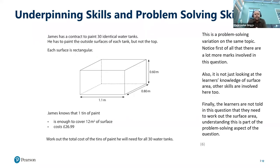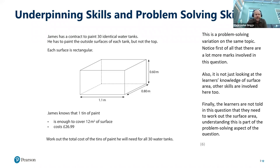Here is a problem solving question, which is a variation on that underpinning question. Notice there are a lot more marks involved — it's a six-mark question — and it's not just looking at the learner's knowledge of surface area; other skills are involved too. Not only do they need to work out the surface area, they also need to work out how much paint they would use, so they're working with money as well. Crucially, learners are not told in this question that they need to work out the surface area — understanding that is part of the problem solving aspect.